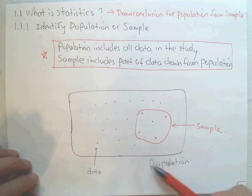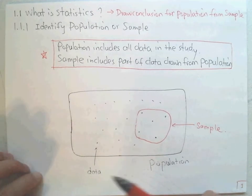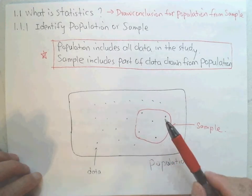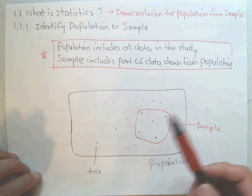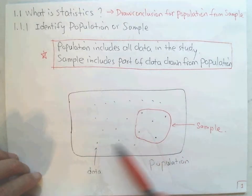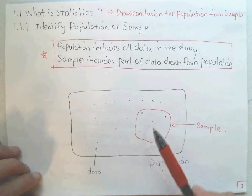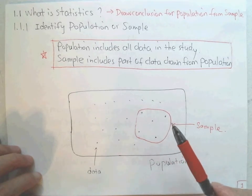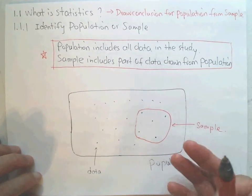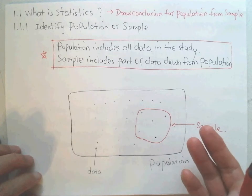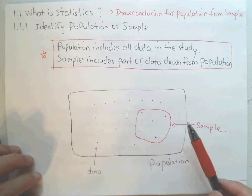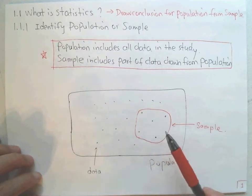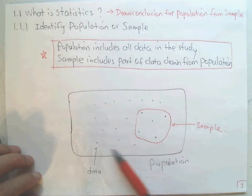Usually we don't have the information for the full population — we need to do estimation. For example, when we're going to study the average salary of American men, do we have all the data? No, we don't. We'd have to do a census to find out all the salaries for all the men in the United States. That looks impossible. So the population is impossible to get. What we can do is get a small part of the population — do some surveys from cities like Winston-Salem or others to find some men and get the salary data. That's the sample.